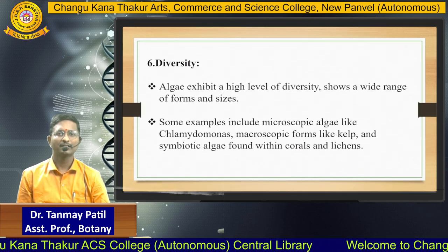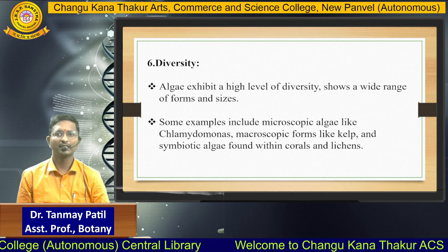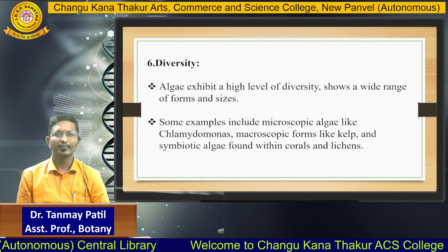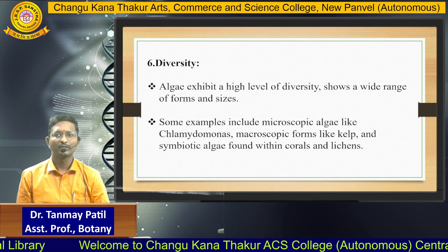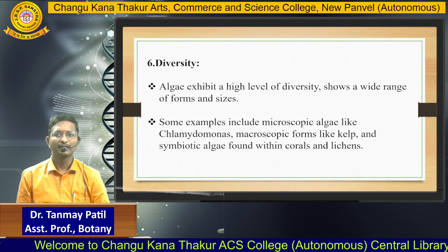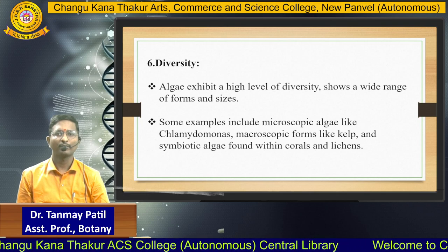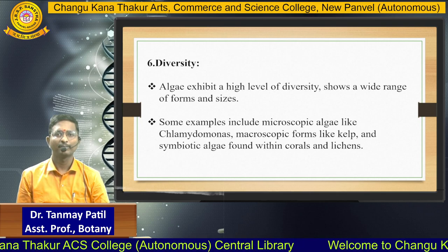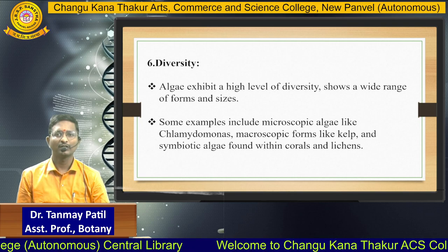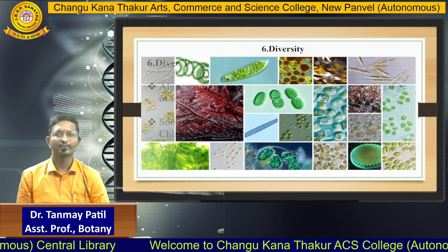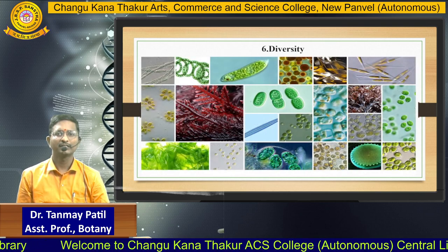Next is diversity. Algae exhibit a high level of diversity, showing a wide range of forms and sizes. Some examples include microscopic algae like Chlamydomonas, macroscopic forms like Kelp, and symbiotic algae found within coral and lichen. Here is a picture showing the diversity of algae.